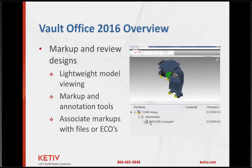Vault Office also offers others outside of engineering the ability to mark up drawings. For example, manufacturing, as they're making a part or putting an assembly together, might notice a mistake on a drawing and want to communicate those issues back to engineering. Rather than using a red pen on a printed sheet, they can do it electronically, check it back into Vault, and now have a record of what the change request was. This opens up workflows for more streamlined change request and change order type processes.